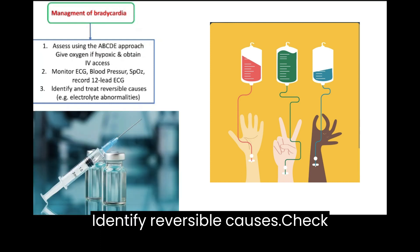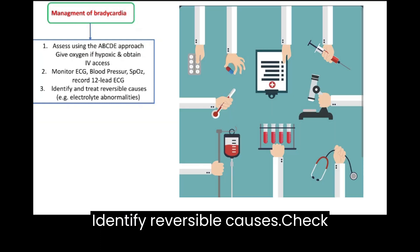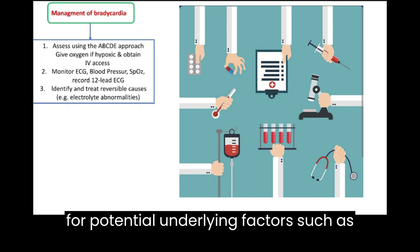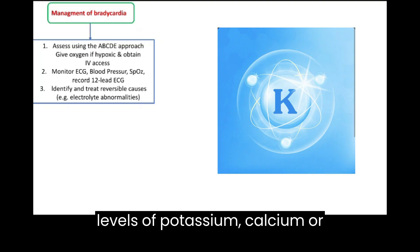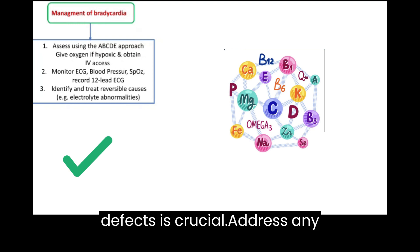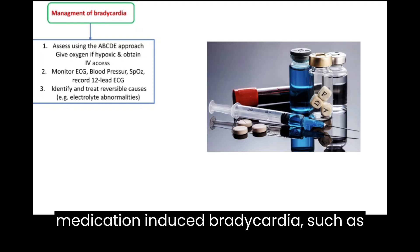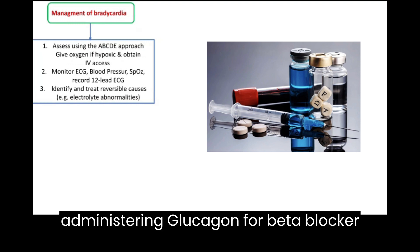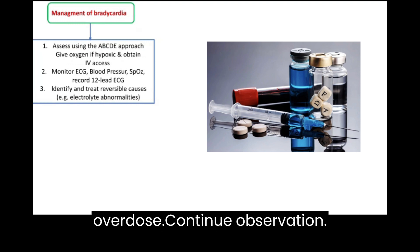Identify reversible causes. Check for potential underlying factors such as electrolyte abnormalities, including low levels of potassium, calcium, or magnesium. Correcting these metabolic defects is crucial. Address any medication-induced bradycardia, such as administering glucagon for beta-blocker overdose.